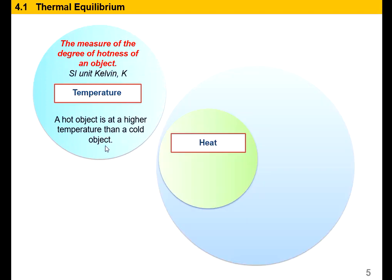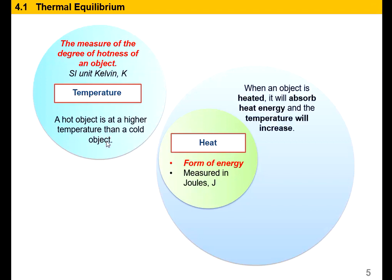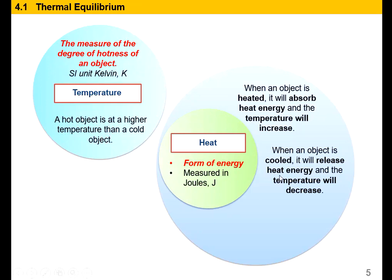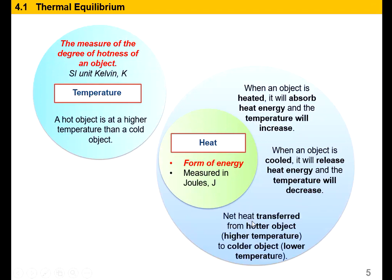The next term is heat. The definition of heat is simply a form of energy — that is why they call it heat energy. The SI unit of heat is joules. When an object is heated, it will absorb heat energy and the temperature will increase. When it is cooled, it will release heat energy and the temperature will decrease. Net heat transfer is from the hotter object, at higher temperature, to the colder object, at lower temperature. We will explain what net heat means in the next slide.